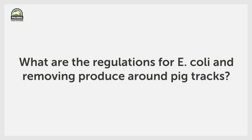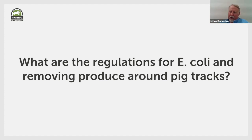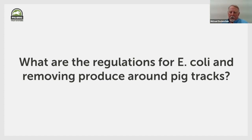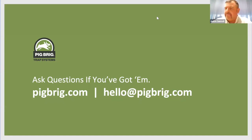Another question: can you repeat the regulations on E. coli regarding removing produce around pig tracks? The FDA has those rules — if there are tracks in a field, they want the farmer to plow up any crop around that track in a ten-foot radius. Because of this, farmers growing fresh vegetables for market consumption in Texas are increasingly doing it behind high game-proof fences, to avoid losing their crop if a deer or sounder of pigs comes in.